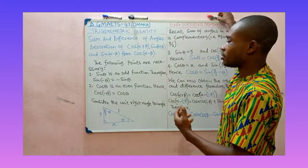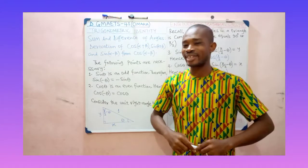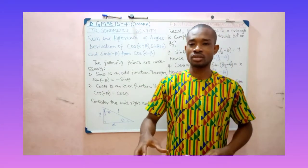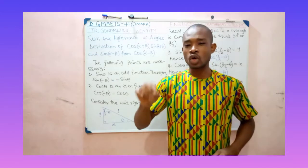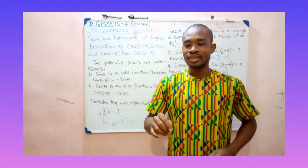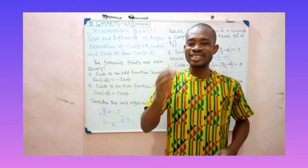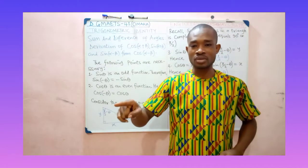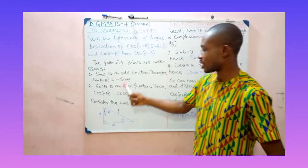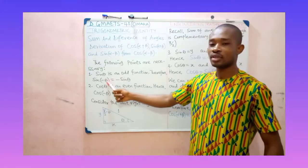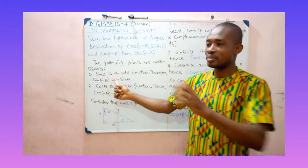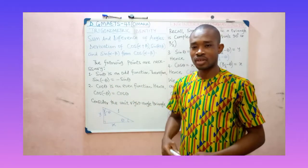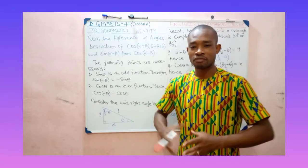One of them is we should know that sin θ is an odd function. For an odd function, sin(−θ) is going to give you −sin θ. So for something like sin(−30°), we expect to get −sin 30°. It's a property of odd functions.